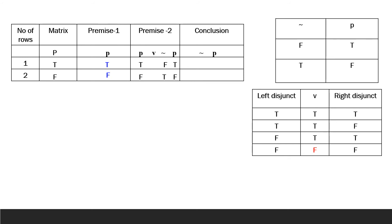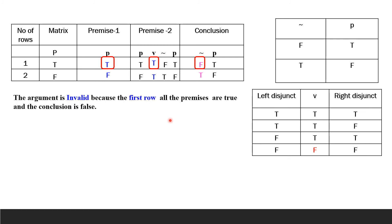The main connective is disjunction in the second premise. For the conclusion, P's values are true, false, so negated: false, true. Now check validity. In the first row, both premises are true, but the conclusion is false. We have found the invalidity condition in the first row. Therefore, the argument is invalid.